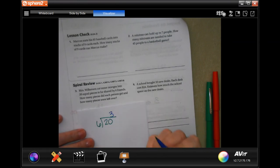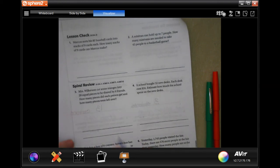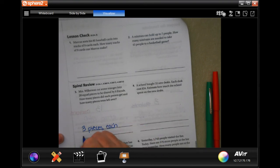6 is going to go into 20, 3 times. 3 times 6 is 18. Subtract and get 2. So, each friend, 3 pieces each. 2, our remainder, left over.